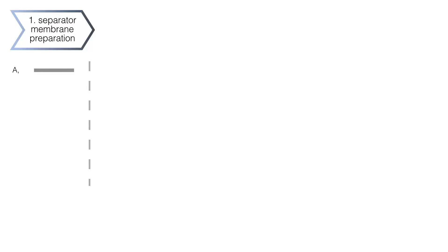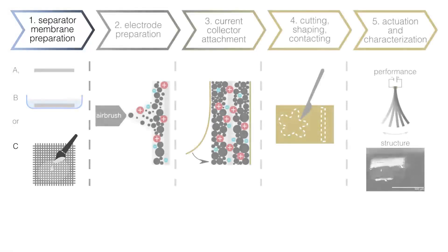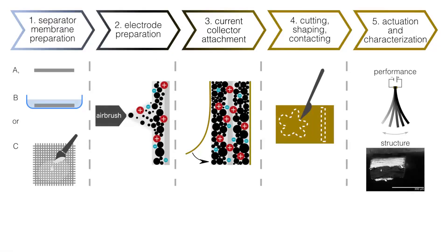To begin, choose between a tri-PTFE membrane, the same membrane soaked in electrolyte, or a textile-reinforced membrane. Every option results in a functional actuator. See the text for help with the selection.